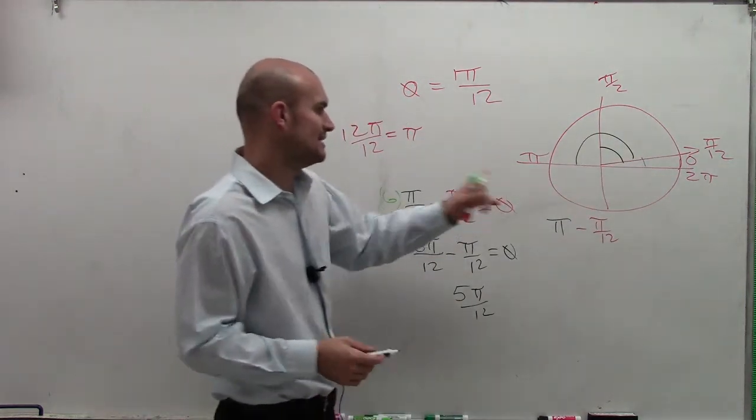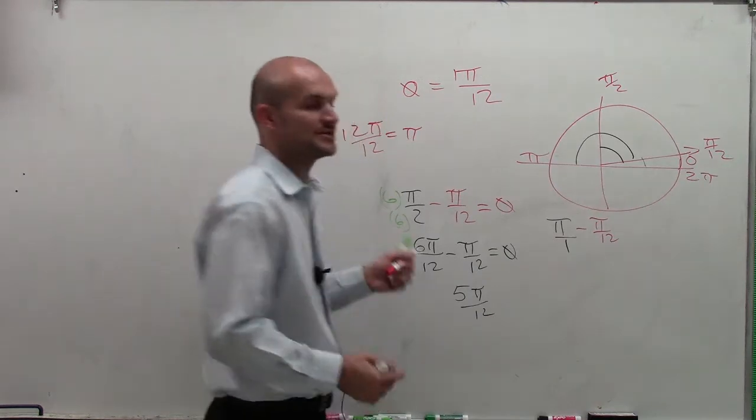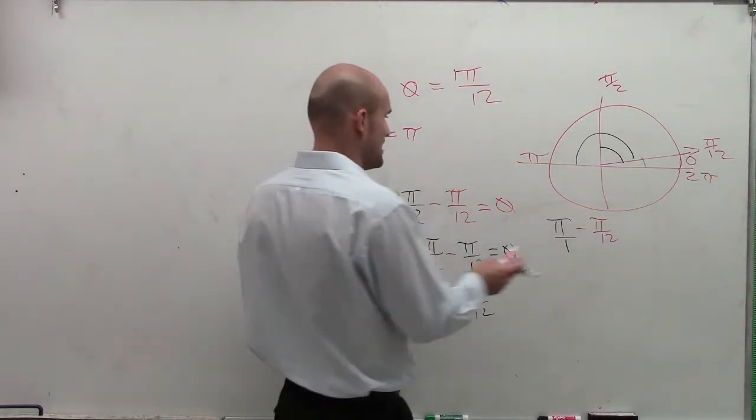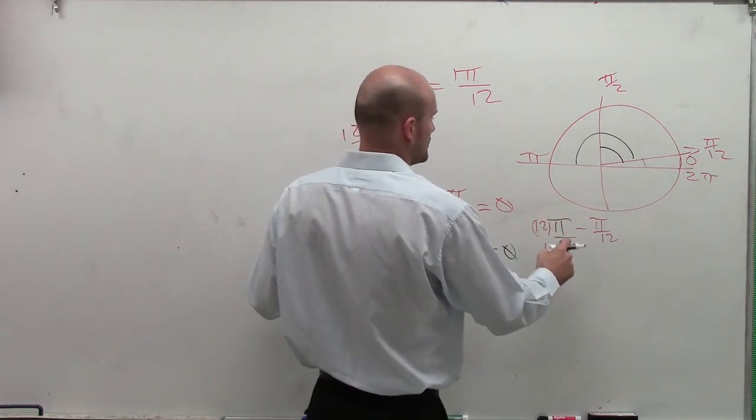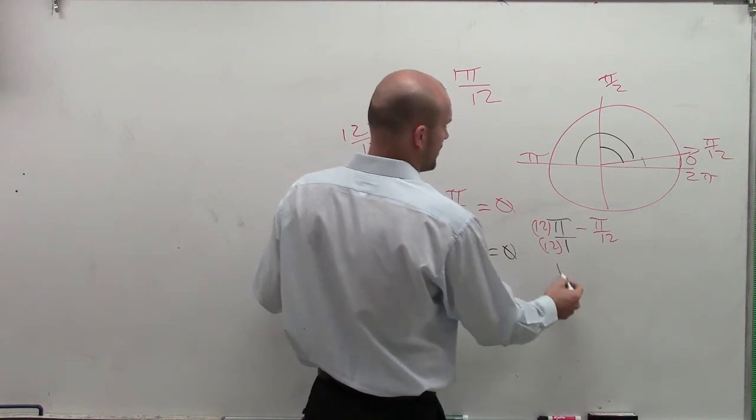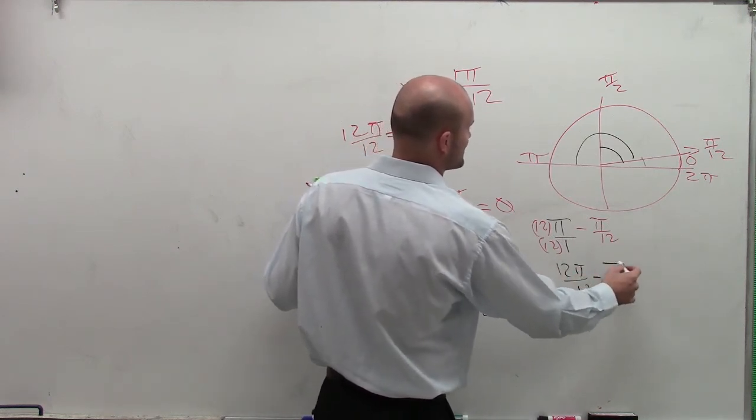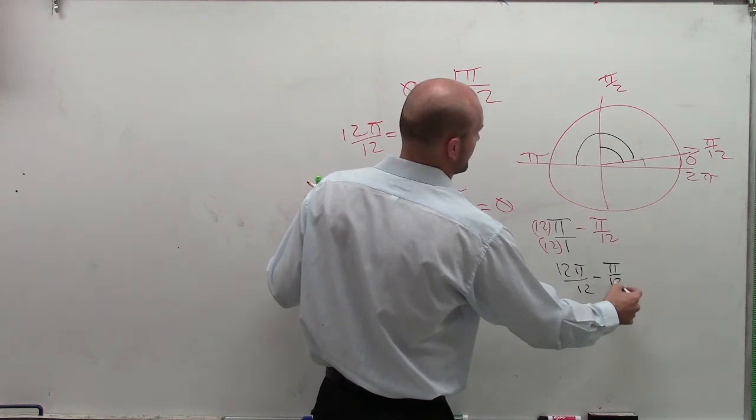So again, we need to get this to be our denominator. So pi over 1, get that to become a denominator, and here I'll multiply by 12 over 12. Therefore, I have 12 pi over 12 minus pi over 12.